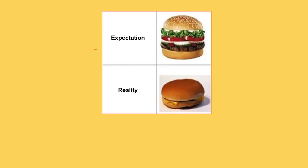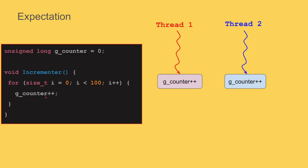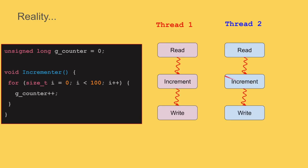Hopefully by now I've convinced you that expectation is very different from reality in multi-threading. What goes wrong? Each thread tries to increment g_counter while running in parallel. There's a race between threads for incrementing — both want to increment g_counter, a shared resource, at the same time. But it's worse than this: even incrementation is not an atomic operation. It requires reading, incrementing, and then writing back the result — and these operations between threads may get interleaved in an undeterministic way.